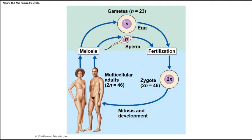The egg contains 23 chromosomes and the sperm contains 23 chromosomes. When they unite — called fertilization — they form a zygote with a total of 46 chromosomes.